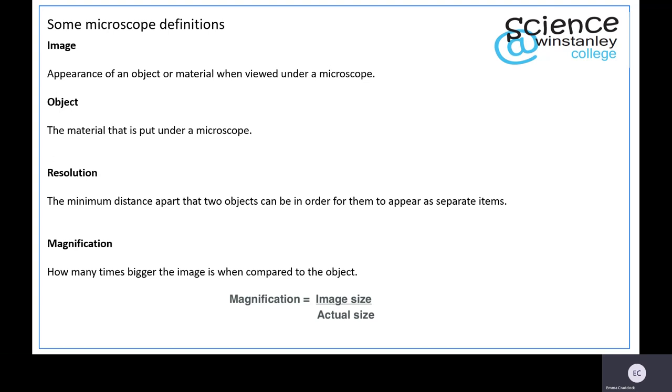Okay, here are your answers. Image refers to the appearance of an object or material when viewed under a microscope. This is what you see through your eyepiece lens.